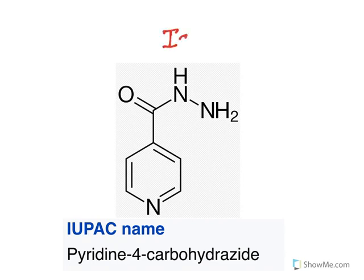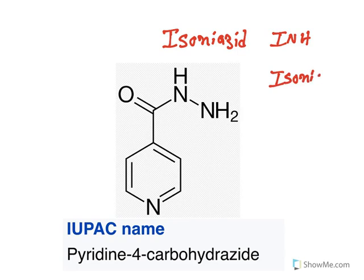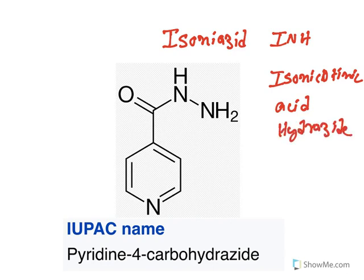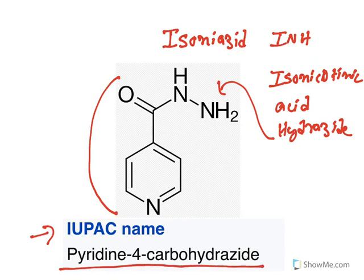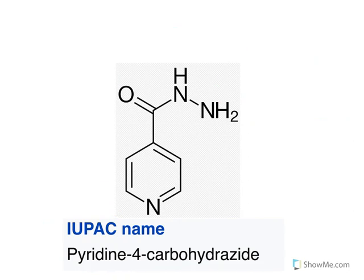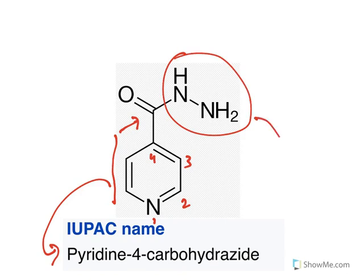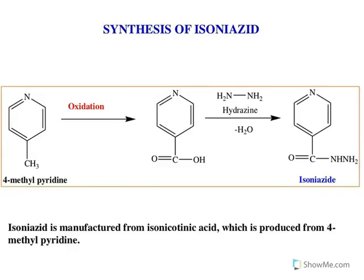Isoniazid, also known as INH, stands for isonicotinic acid hydrazine. The isonicotinic acid part and the hydrazine part together form the molecule. The IUPAC name is pyridine-4-carbohydrazide: the ring is pyridine, and at the fourth position there is a carbohydrazide linkage.